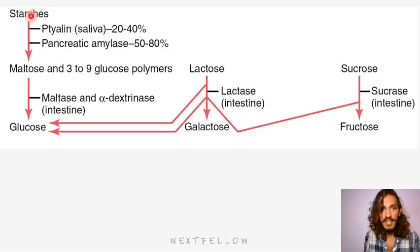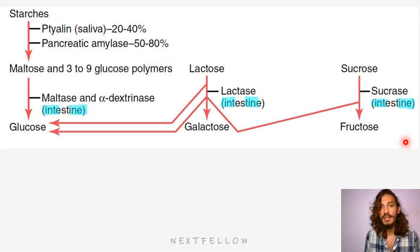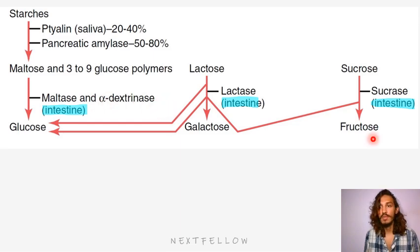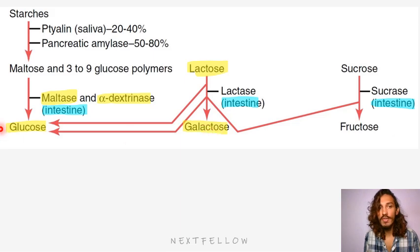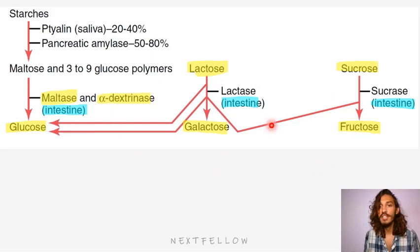Earlier we saw the effect of salivary and pancreatic amylase. Now finally, maltose and the glucose polymers are there. Maltase acts — this is what happens next in the intestine. Whatever disaccharides or glucose polymers are there, they should be digested. So maltase acts, along with something called alpha-dextrinase — they will finally break this maltose and the polymers to glucose. Lactose is broken down by lactase, giving galactose and glucose. Sucrose is broken down by sucrase to fructose and glucose. That is the final products which need to be absorbed.